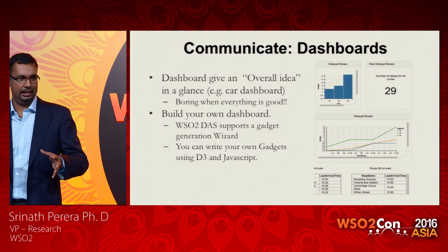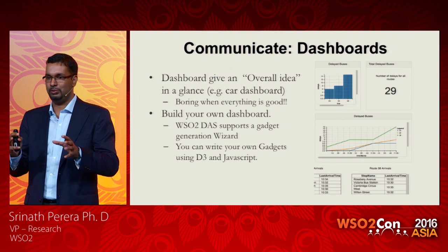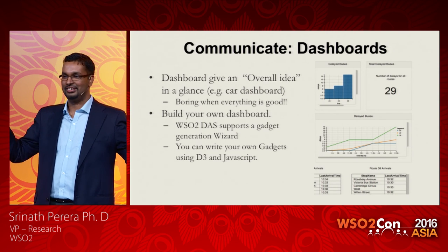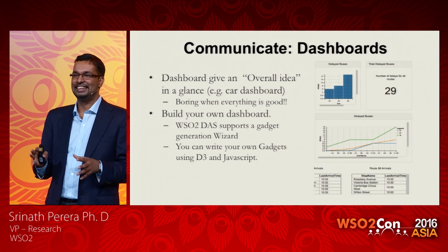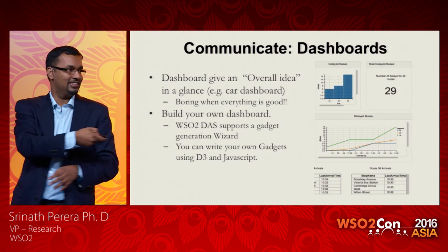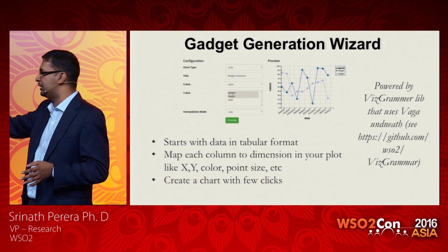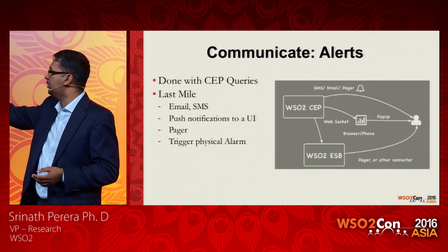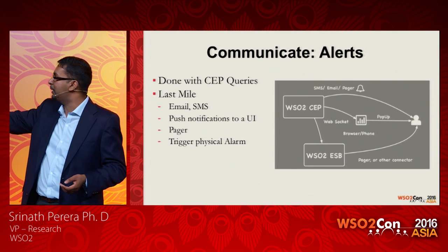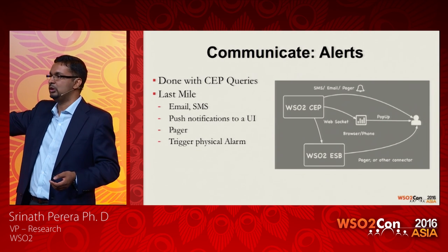Now for getting results to the end user. One approach is a dashboard. Think of it like your car dashboard — it's very boring when things are good, and it grabs your attention when something is bad. That's the goal. We give you a wizard to create your own dashboard, but for complicated interactions you need to write code. You can also generate alerts — emails, SMS, or for complicated use cases you can send the event into the ESB, which can use a lot of connectors to do much more complicated things.